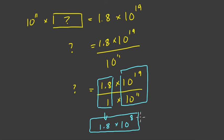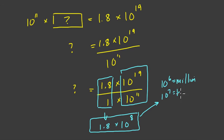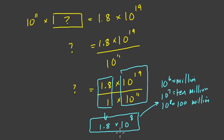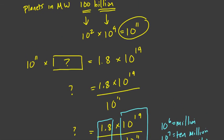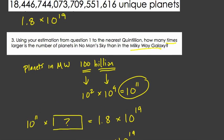What is that number? Well, 10 to the 6th is a million, 10 to the 7th is 10 million, and 10 to the 8th is 100 million. So 1.8 times 10 to the 8th is almost 200 million — almost 200 million times larger. It's not that we add 200 million planets to the Milky Way to get the number of planets in the video game — we multiply.